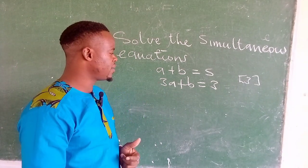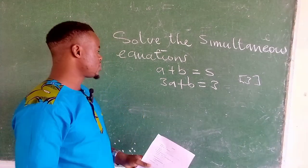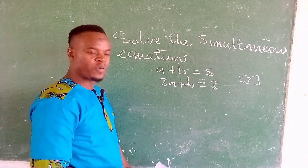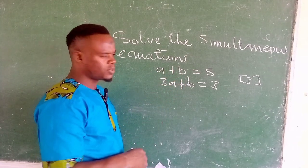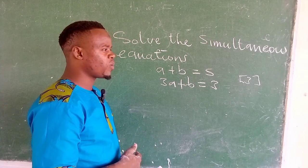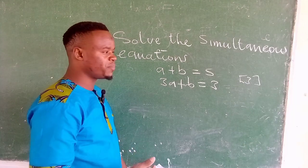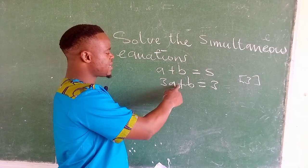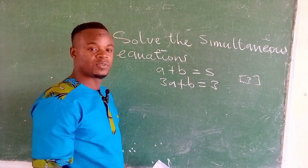For you to apply the elimination method, you have to check for coefficients that are equal. On this side we have 1, here we have 3 as coefficients, and here we have 1 and 1. Now, if you happen to find equal coefficients, what you need to do is eliminate them. We check for the signs that are before them — since the signs are the same, we are subtracting.